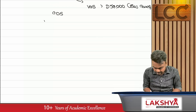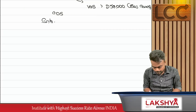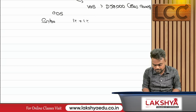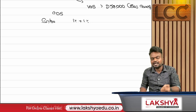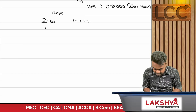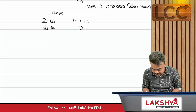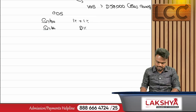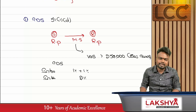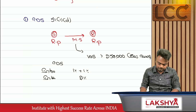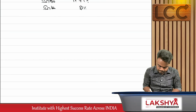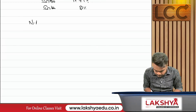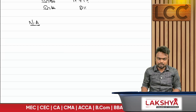If the transaction is intra-state, the TDS rate is 1% plus 1%, that is CGST and SGST. If the transaction is inter-state, IGST will be charged at the rate of 2%. This is the amendment in the chapter of TDS.